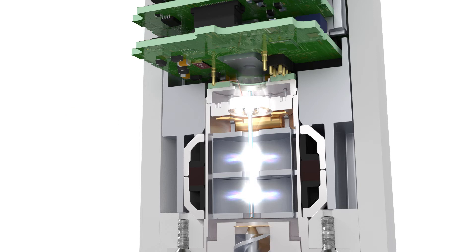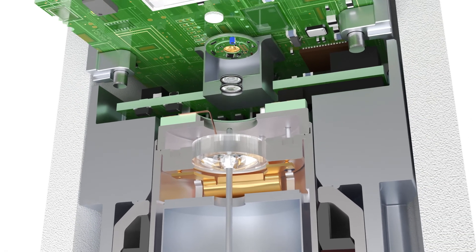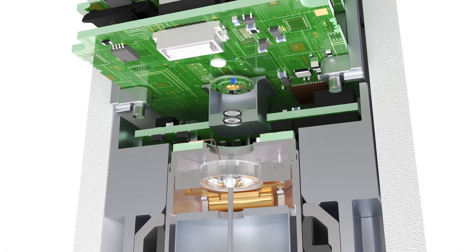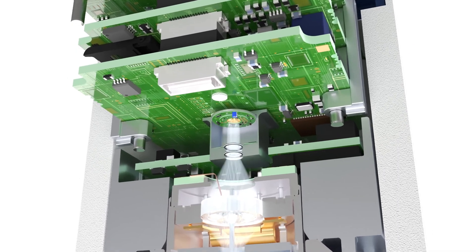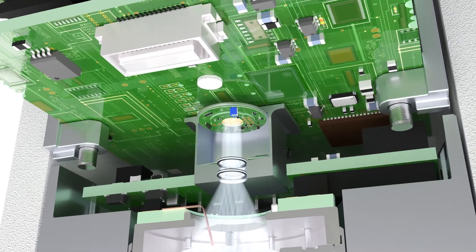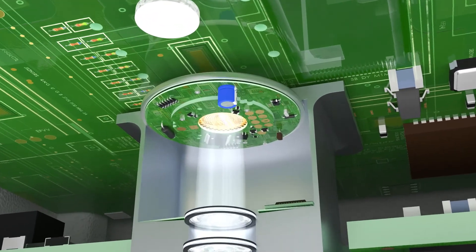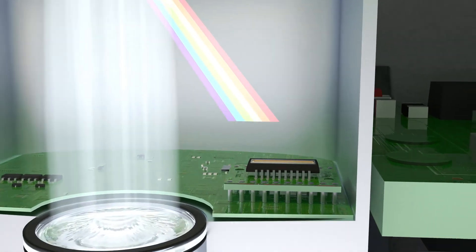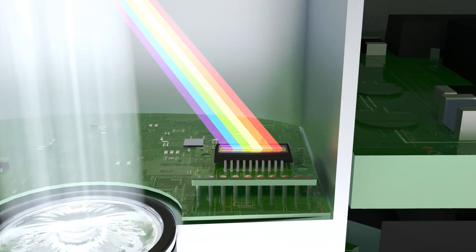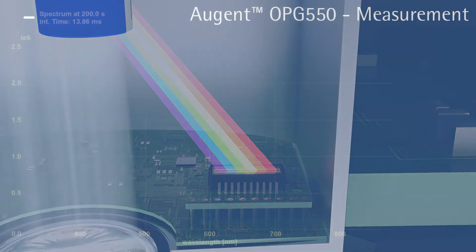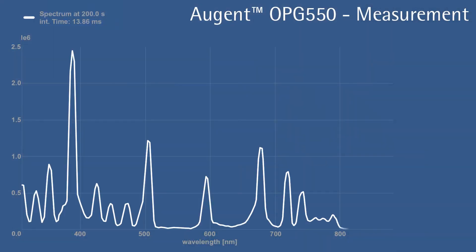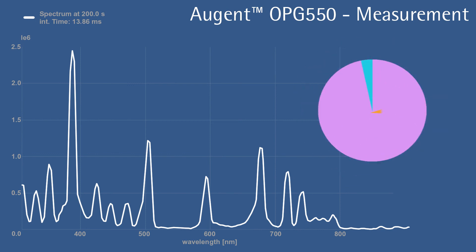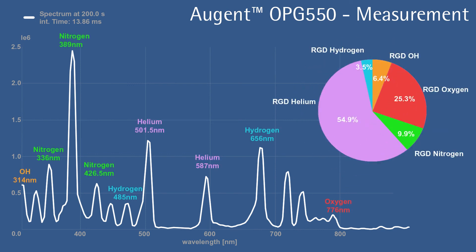A lens focuses the plasma light into the spectrometer, where a dispersive element spreads out the different wavelength components of the light. With a CMOS chip, the intensity of each wavelength is measured, and intelligent software analyses the spectra to determine the gas composition.